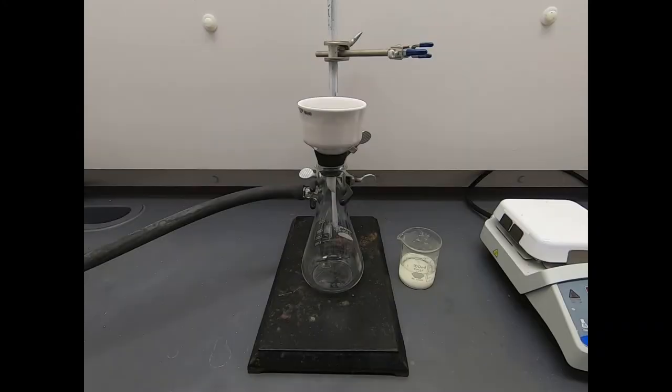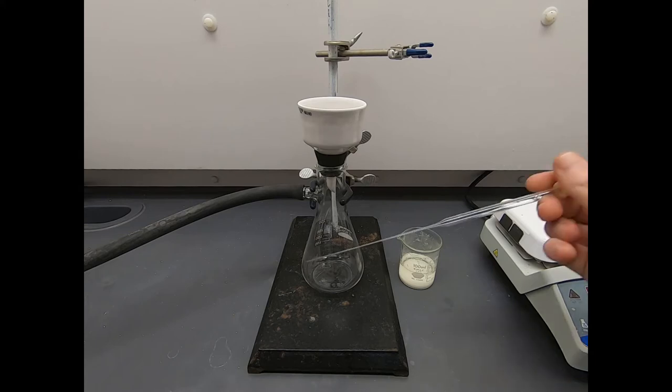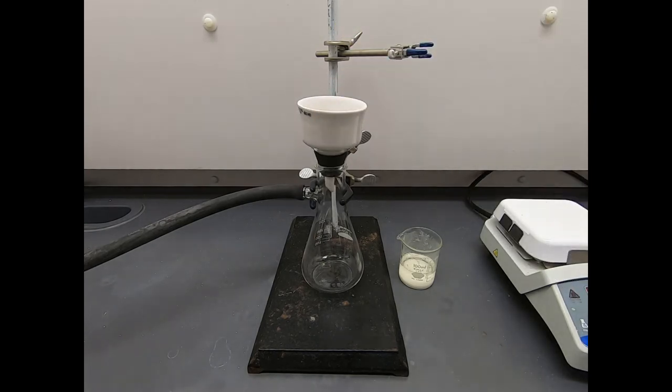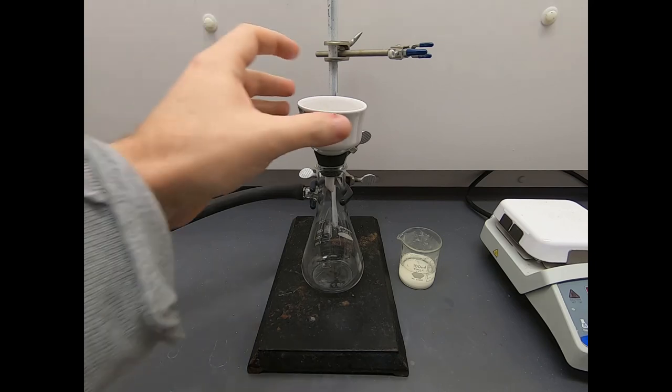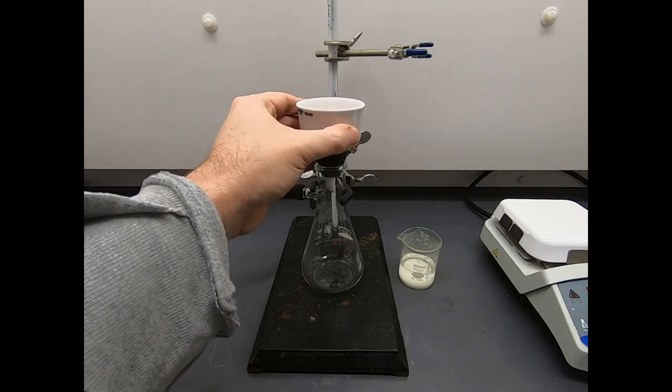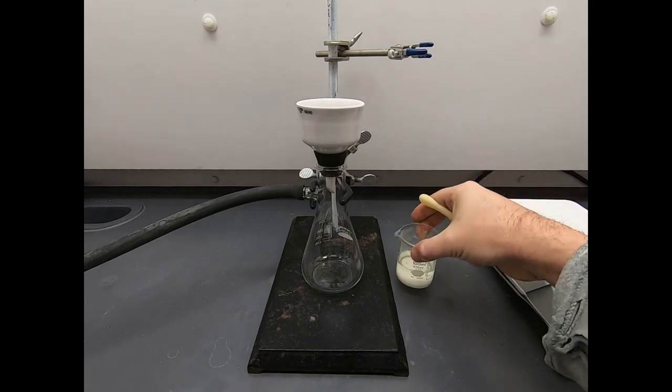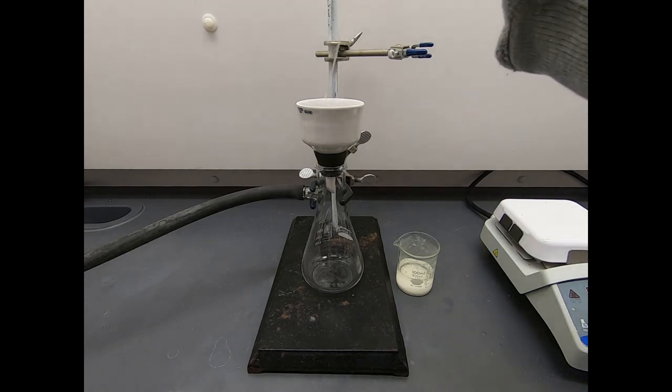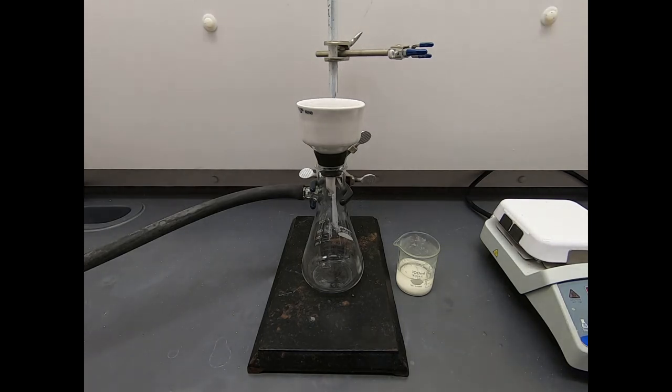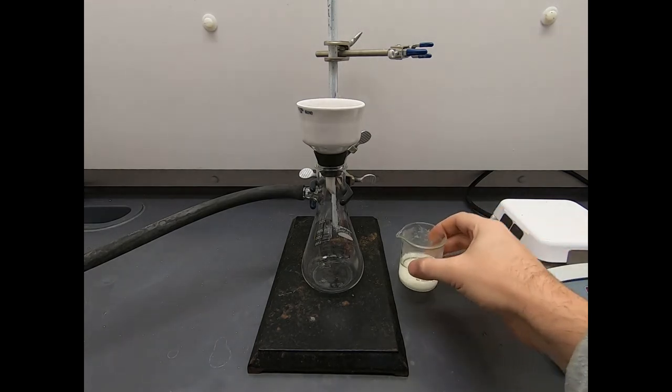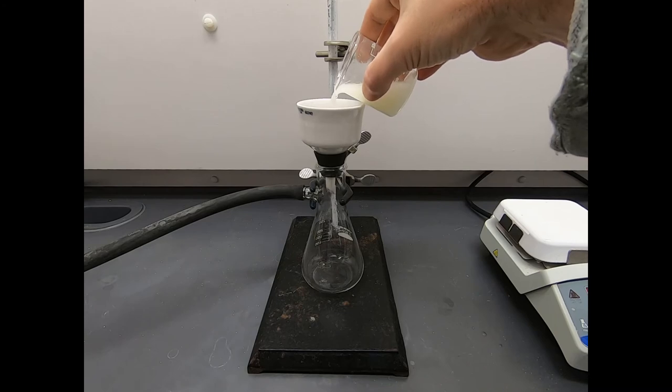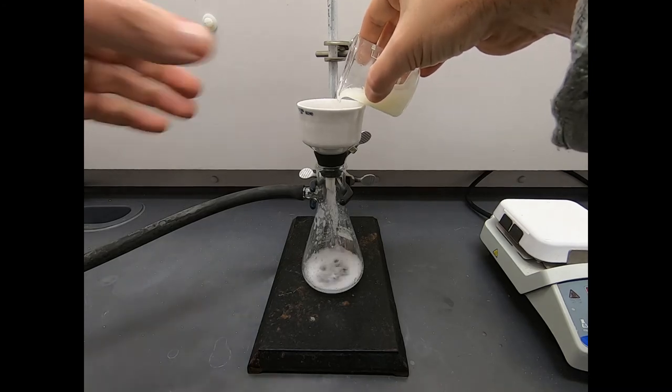Let's do a filtration. We have a filter flask set up with a sidearm to the vacuum, a Buchner funnel, and a rubber adapter. I'm going to turn on that vacuum. There's a filter paper in there. This is our solution of our product in water. Since it's water, we'll just seat the filter paper with some water. Take a peek in there. Make sure it's sealing up everything. That looks great. Now let's give this a gentle swirl to suspend that solid and just pour this material right on through.